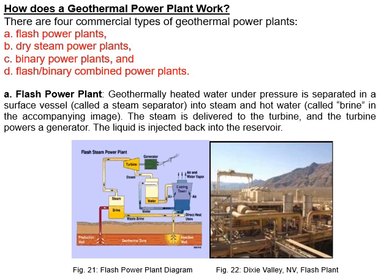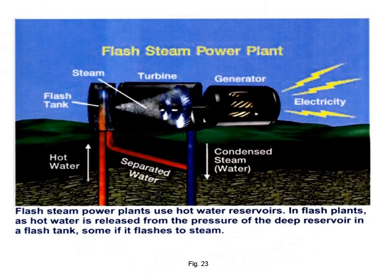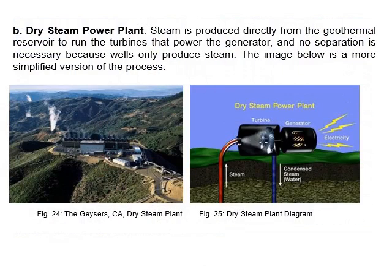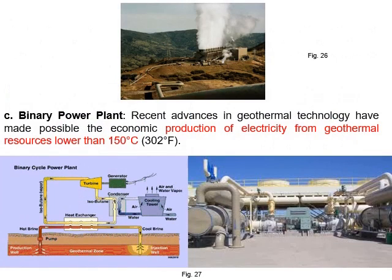Geothermal power plants generate electricity in several types: flash, dry steam, binary, and flash-binary. In a flash power plant, hot water is brought from the geothermal reservoir and split into returning hot water and steam. The steam rotates a turbo generator to generate electricity. In a dry steam power plant, steam comes directly from underground with no hot water separation — direct steam rotates the turbo generator.